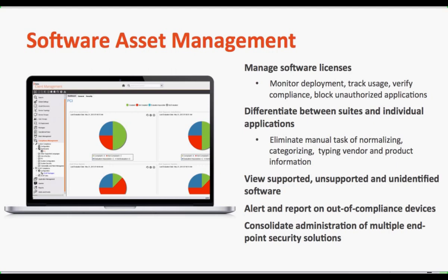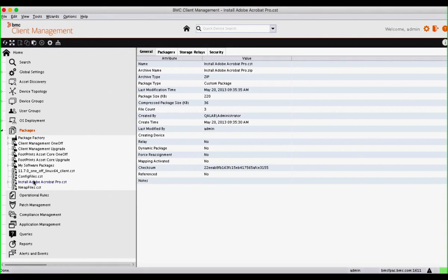Once the OS has been deployed to your system, you need to get all the software packages a user may need. Based on their device group or user group, you can automatically assign certain software applications based on their role within the organization, which automatically gets installed onto these devices. This can apply to new images or existing ones. So if a user moves from the sales department to HR and now needs the HR application, that's automatically done when they are updated in Active Directory. Or when a new HR employee starts, we put the OS on and then install all applications appropriate to their department.